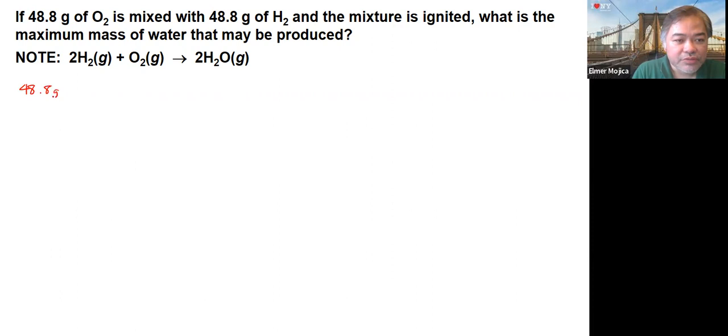48.8 grams of oxygen - we convert it to moles. For every one mole of oxygen, you have 32 grams of oxygen. Then, based on the reaction, for every one mole of oxygen you produce two moles of water, and for every one mole of water you have 18 grams of water. We cancel out the units.